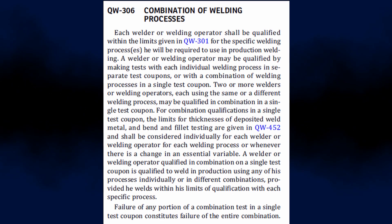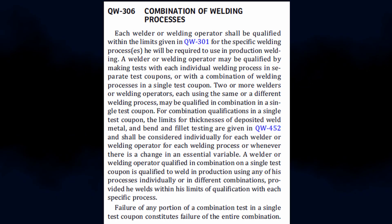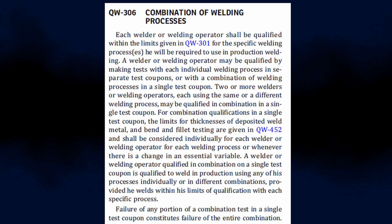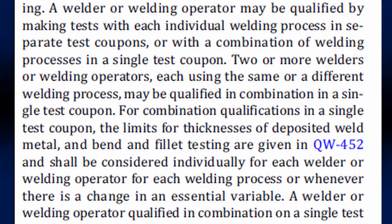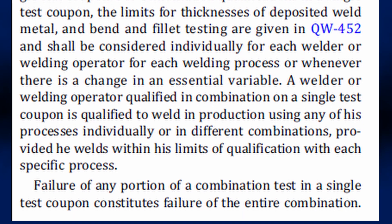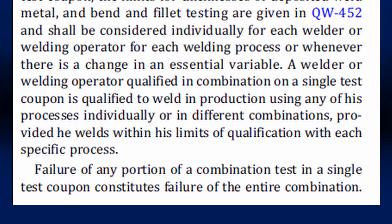If a welder wants to qualify for different welding processes at the same time, QW-306 from ASME 9 specifies that requirement. A welder may qualify for welding processes in separate test coupons or in a combination of welding processes in a single coupon. Also, two welders may qualify on a single test coupon considering the limits of thickness, number of specimens, and deposited weld thickness. However, failure of a single test coupon will result in failure of the entire combination.